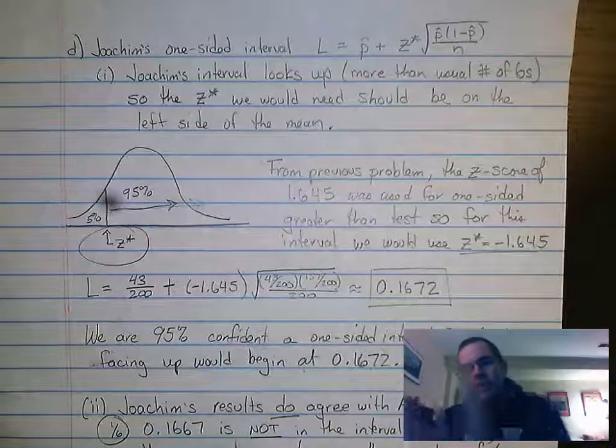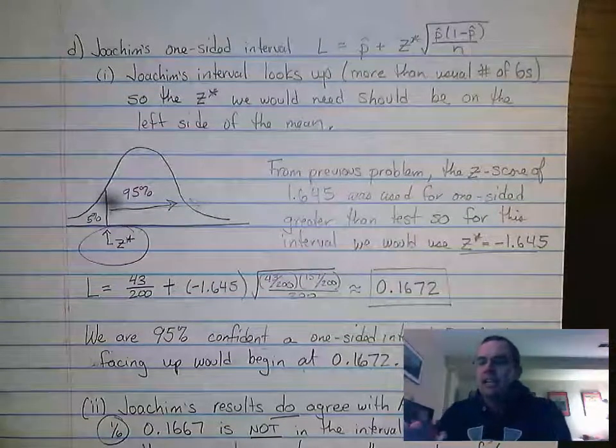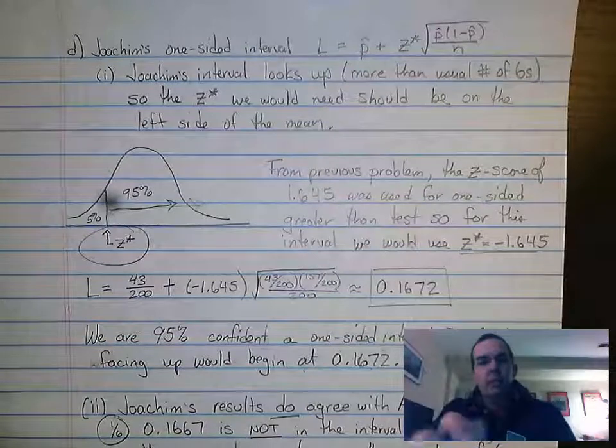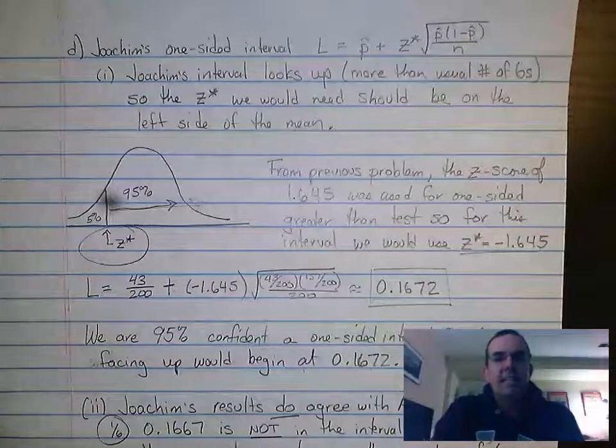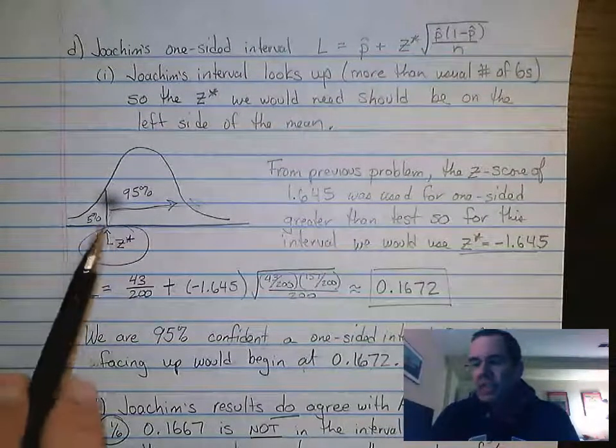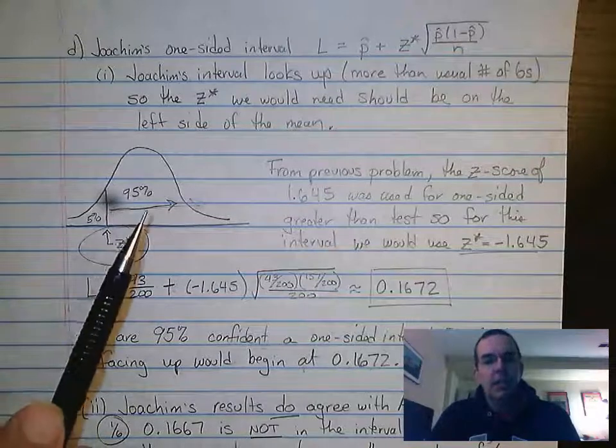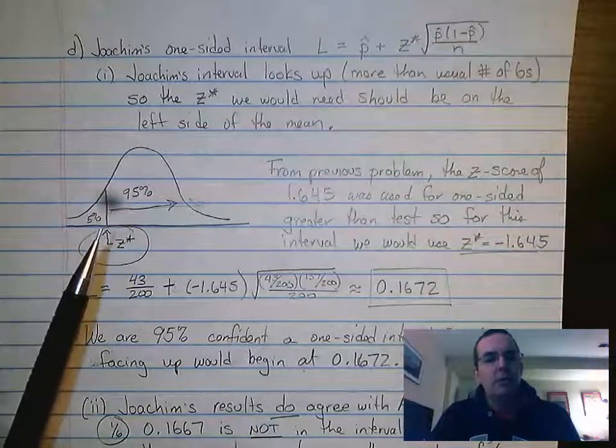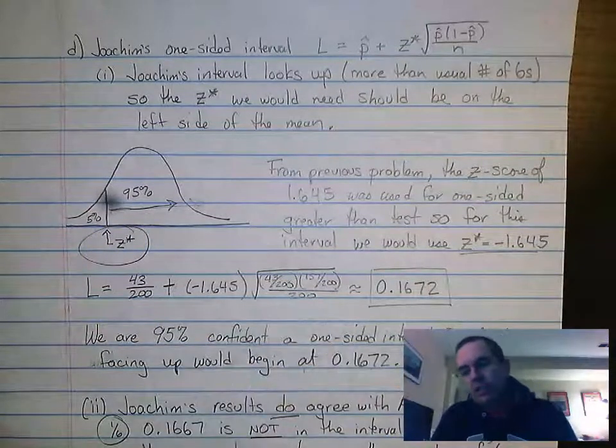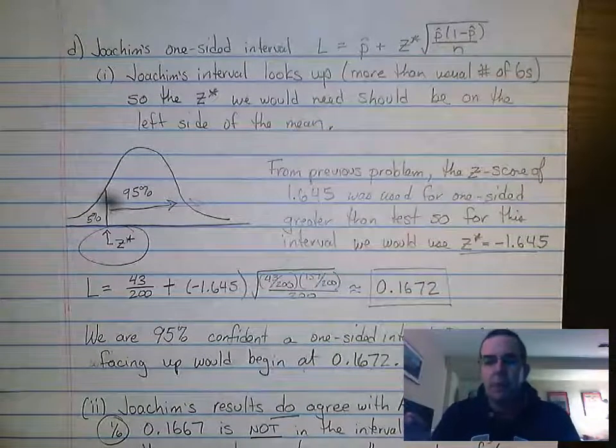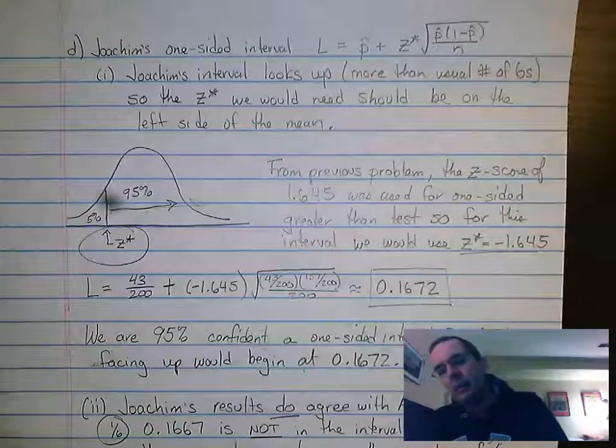They're only looking at a lower bound and then values up. So in this case, what we need to think about is visually, this is what Joachim is trying to do: set a lower bound and only look up. Basically look from what is the smallest possible number that we would expect and up.